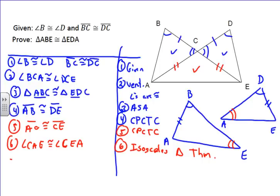So, by angle angle side, we can prove what we were asked to prove, which is that these two bigger overlapping triangles, triangle ABE and EDA, are congruent. And that's by angle angle side.